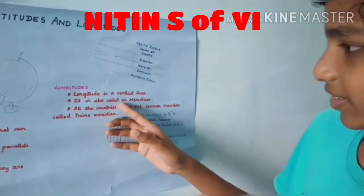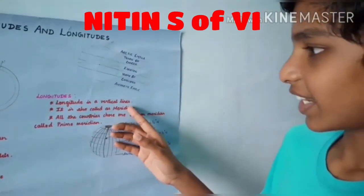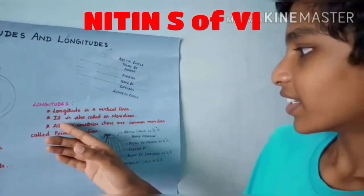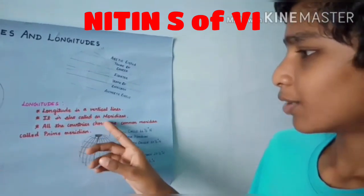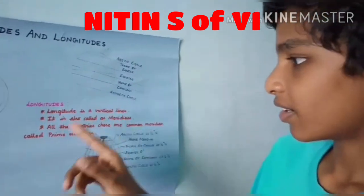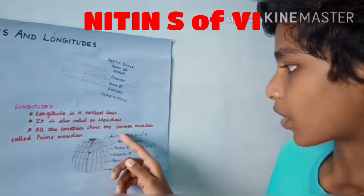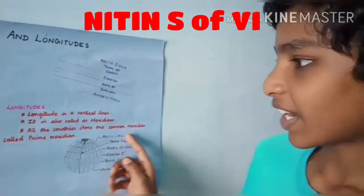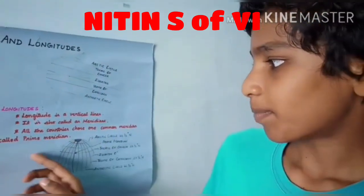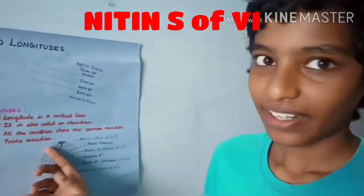Longitudes. Longitudes are vertical lines, also called meridians. All countries chose one common meridian called the prime meridian.